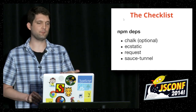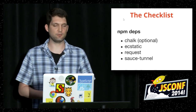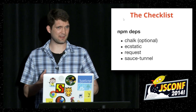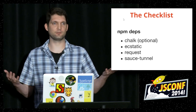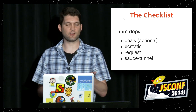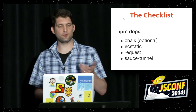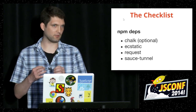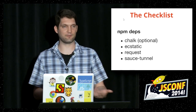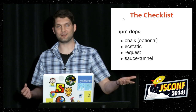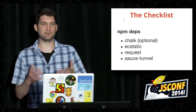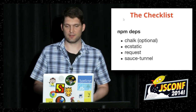For the NPM deps, I use chalk, a static file server — in this case ecstatic — a request library, and Sauce Tunnel. Just a few weeks ago I would have had to put an asterisk next to Sauce Tunnel about connection problems and a specific patch, which was a roadblock. But they've since fixed that. Now you just use Sauce Tunnel and everything works — it's using Sauce Connect version 4, which is updated, faster, and more reliable.